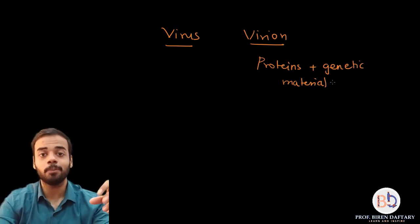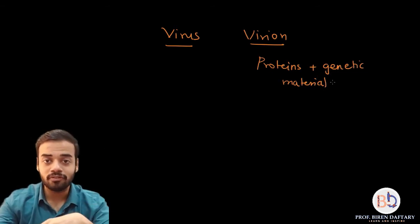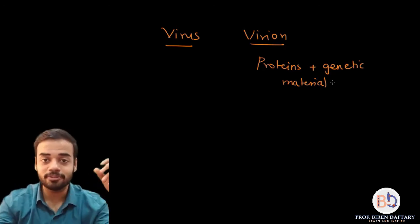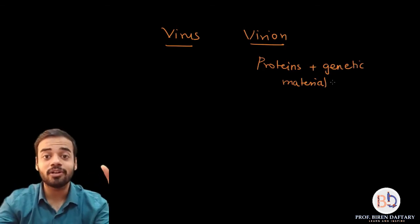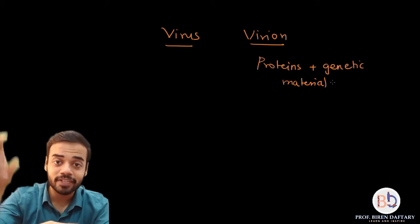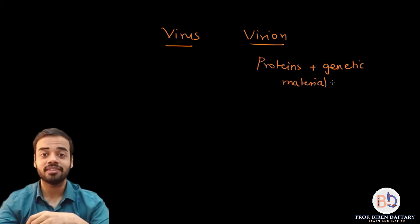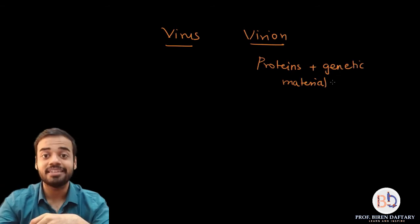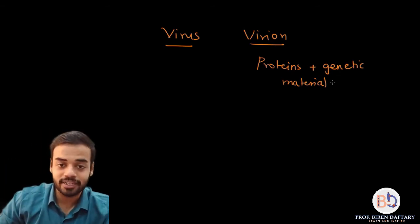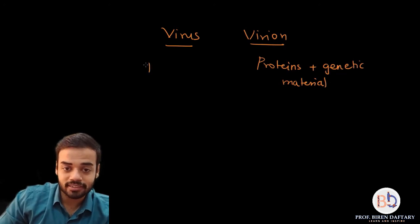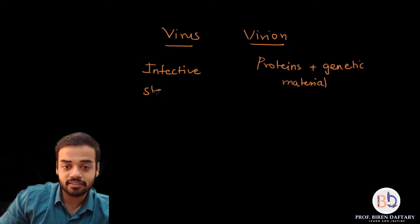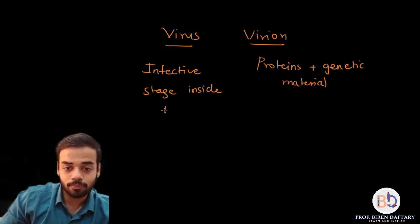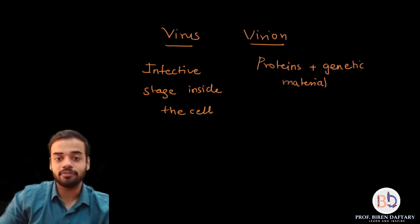For example, if the coronavirus is present outside the body — if it is present in the air — then it is called a virion, because it has still not infected anyone. Once that coronavirus enters the cell, that is the infective stage, and that stage is called the virus. So: virus is the infective stage, inside the cell.